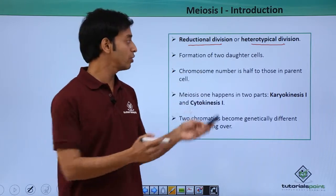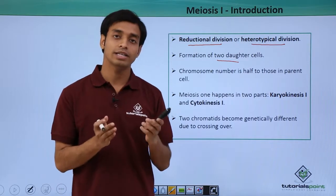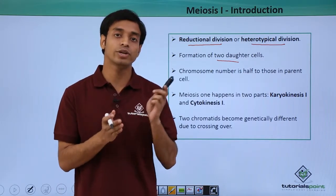It results in the formation of two daughter cells. The chromosome number here gets halved. For human beings, the chromosome number is 46, that is, 23 pairs of chromosomes.